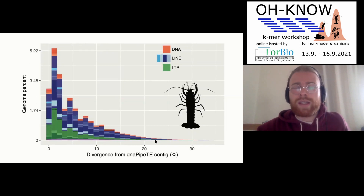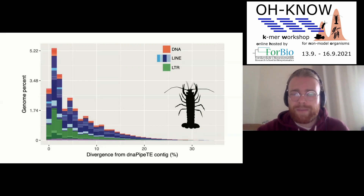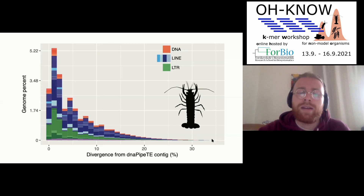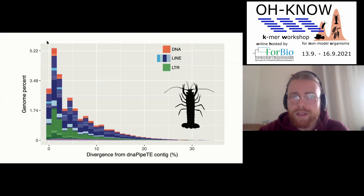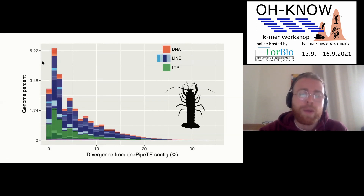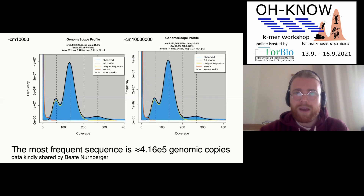We tried to track down what could explain this super repetitiveness. We did see a recent expansion of transposable elements of many kinds, but nothing recent enough to fully explain it. We think there must be some sort of non-transposable element repeat, but we have not investigated further — the crayfish is not our model system, we just wanted to understand the data.